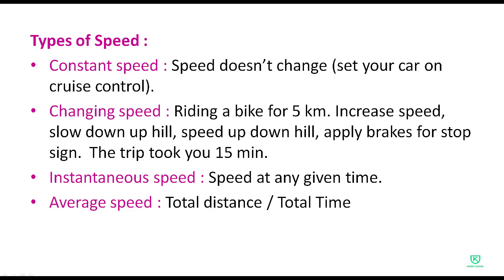Types of speed — first is constant speed. Constant means fixed; the speed is not changing. Example: set your car on cruise control. Cruise control is a button that you press, so the speed will be constant. The car moves without pressing the accelerator, and the speed will not change — it remains constant throughout the journey.